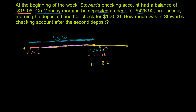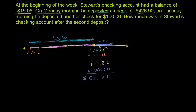Then he deposits another check for $100. We go from $411.82 and add another $100 to that. So $411.82 plus $100 gives us $511.82 — that's how much he has after the second deposit.